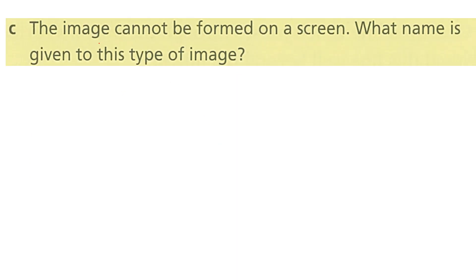Question 1c: The image cannot be formed on a screen. What name is given to this type of image? We said we have two types of image — real image and virtual image. For a real image, we said it can always be projected on a screen. But here it says the image cannot be formed on a screen, so the answer is: virtual image.